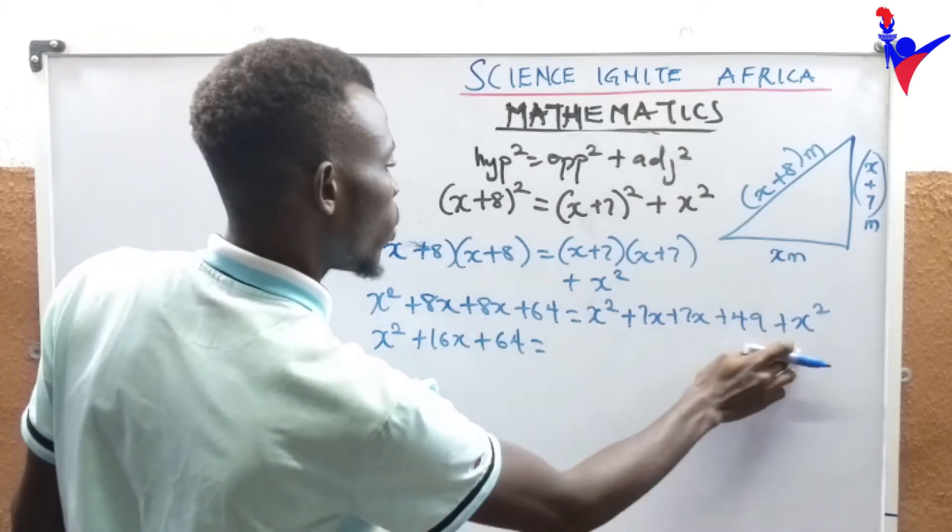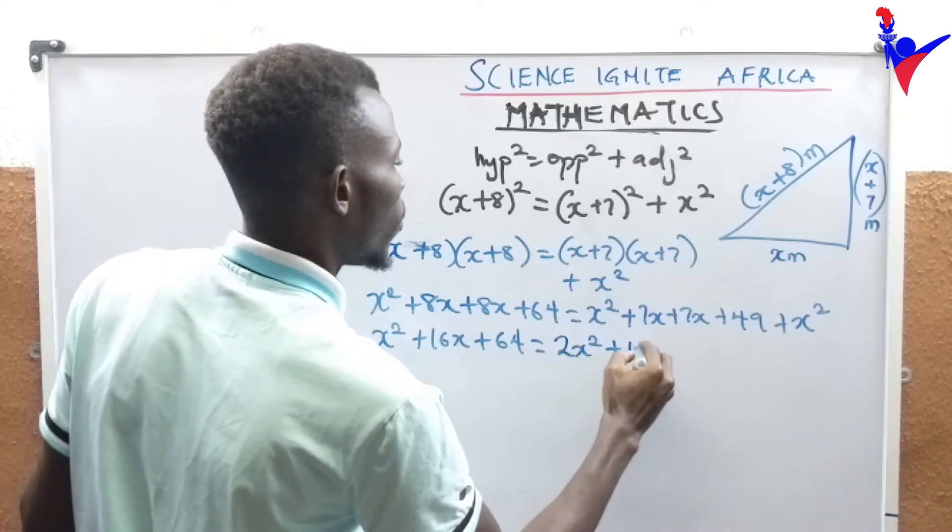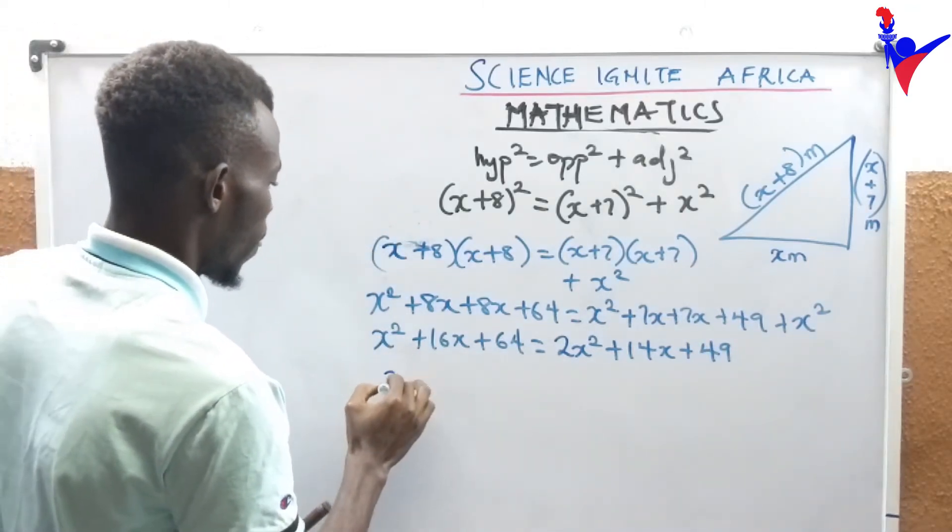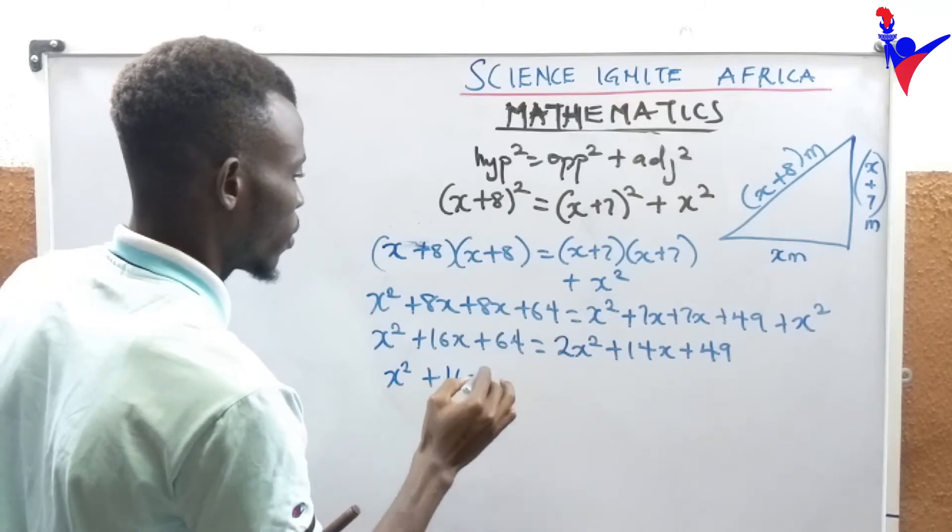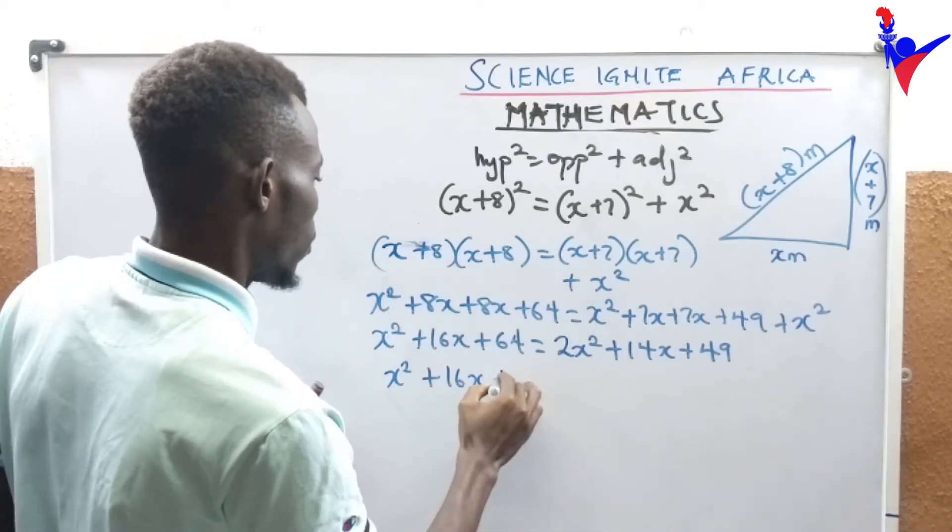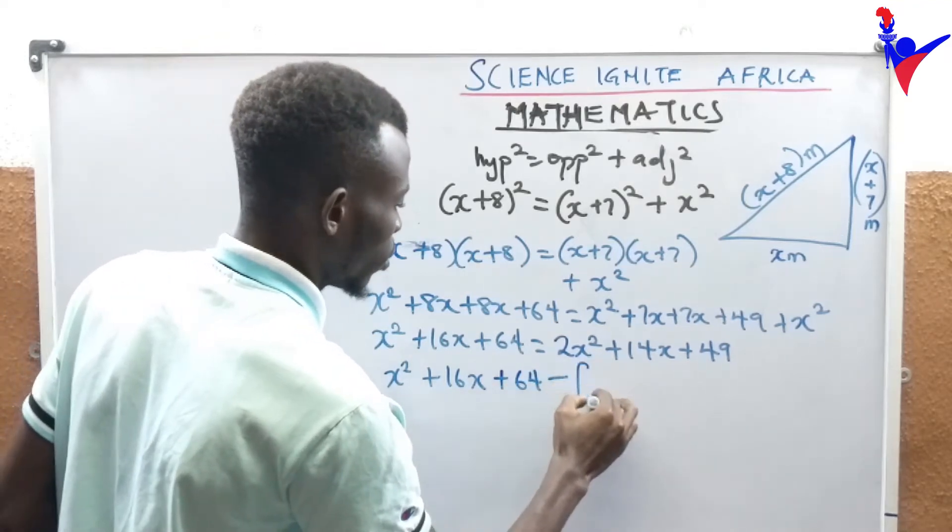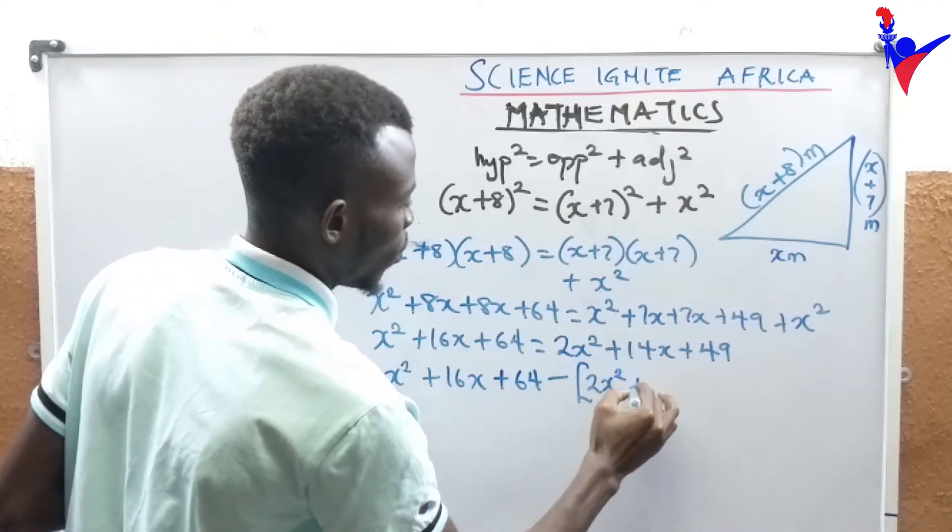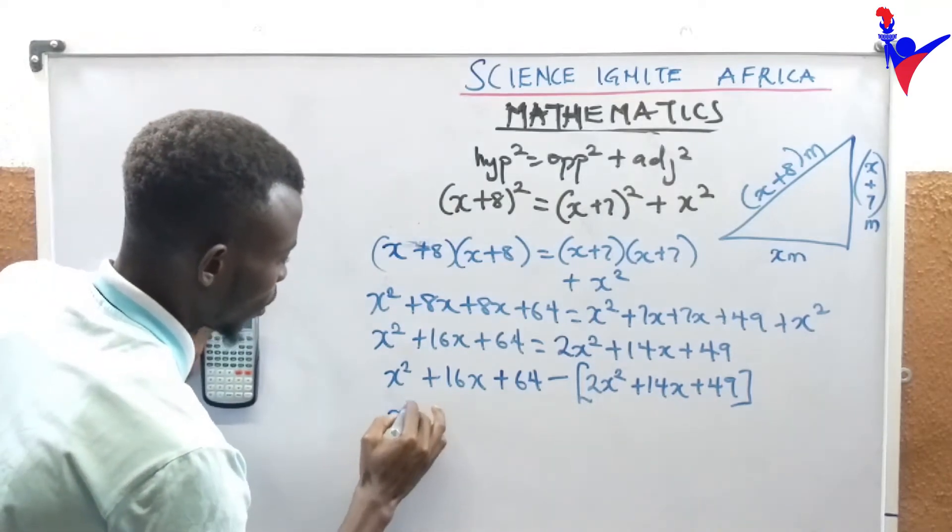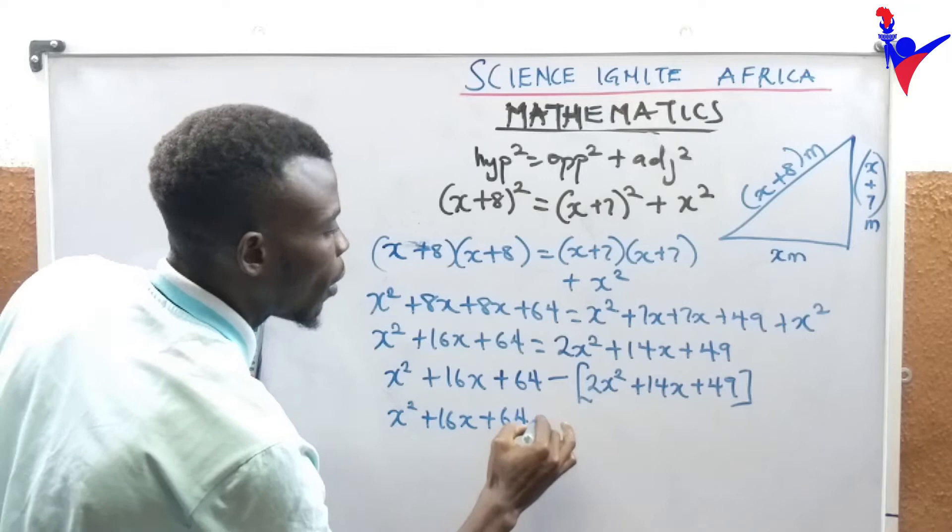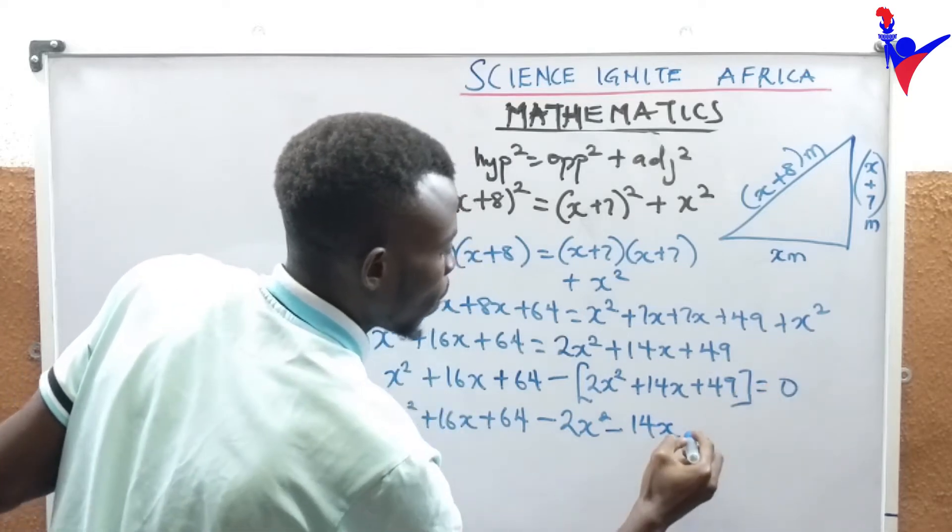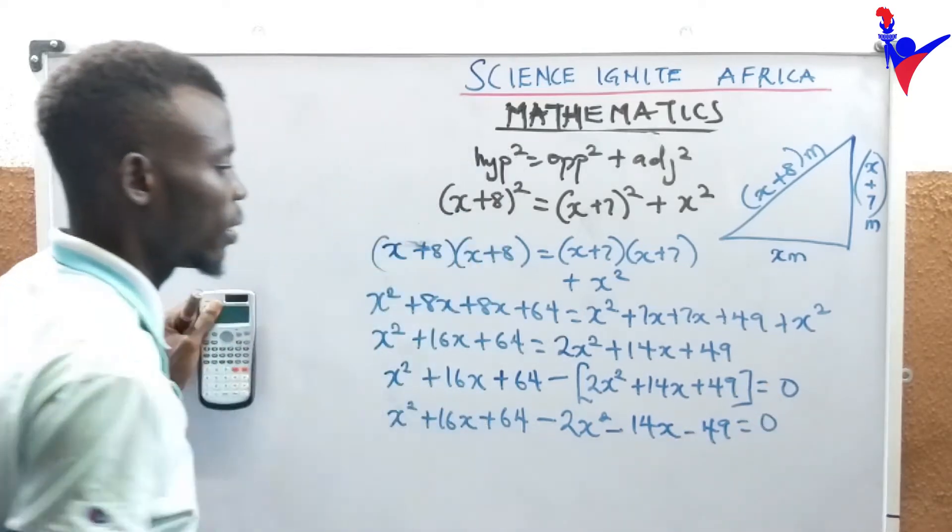Equals x squared plus 7x plus 7x plus 49 plus x squared. This will be x squared plus 16x plus 64 equals 2x squared plus 14x plus 49. Then we have x squared plus 16x plus 64 minus 2x square minus 14x minus 49 equals 0.